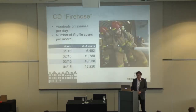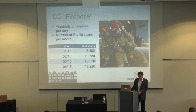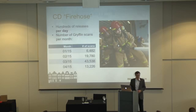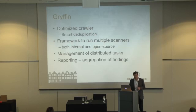We are having hundreds of releases per day — I look at the Griffin statistics for the number of scans we do and it's basically several hundreds every day. I don't have an explanation for why there's a peak in March — maybe it's because the end of the quarter and people need to hit their goals. Griffin has an optimized crawler and smart de-duplication so that we wouldn't scan all the news articles.